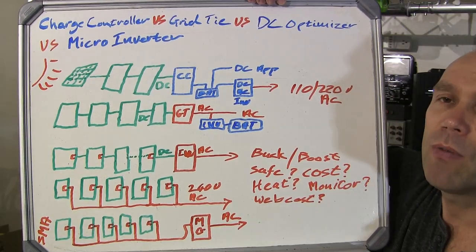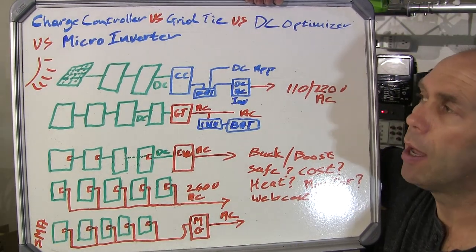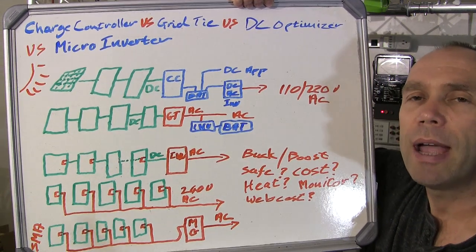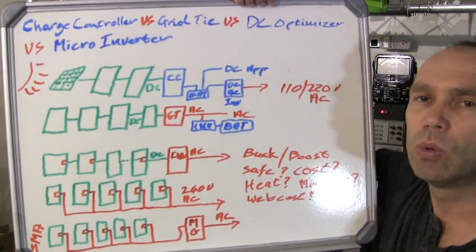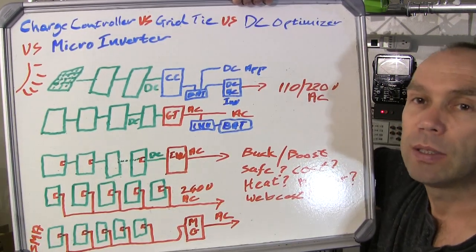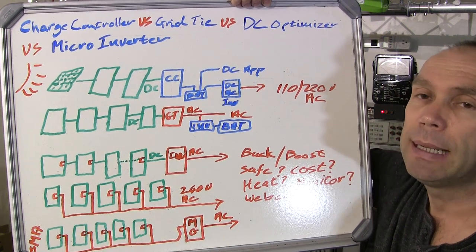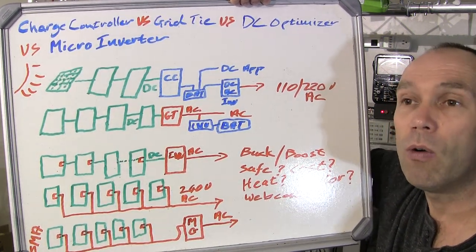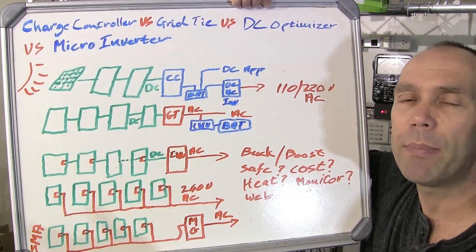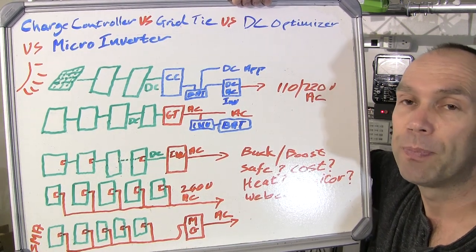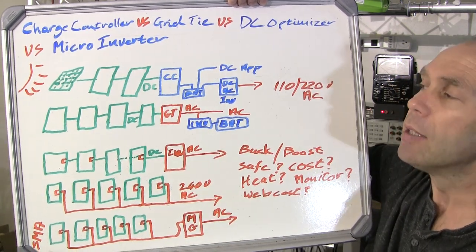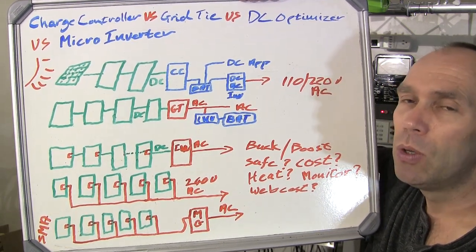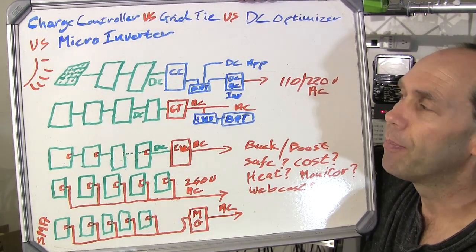So let's start talking about the charge controller. That Outback charge controller would be a typical device installed on a solar power system. Typically these days that kind of system would be used in an off-grid situation — let's say you've got a cabin in the woods which isn't near the grid. Let's explain how it works and where it might potentially also be used in an on-grid situation.